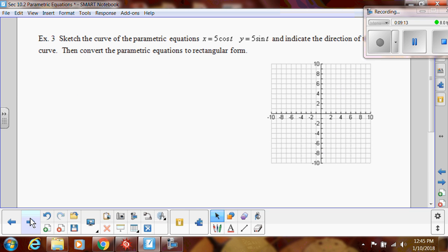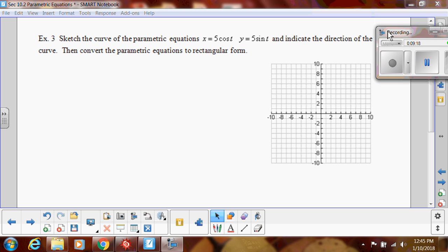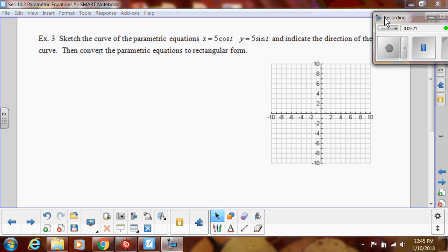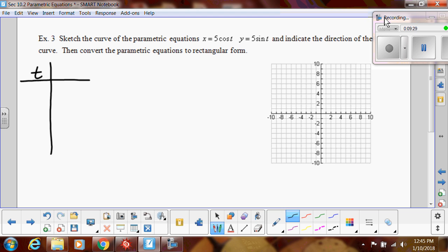Let's do another one. We're going to sketch the curve of these parametric equations and indicate the direction of the curve. Then we're going to convert the parametric to rectangular. So we're going to do both. So we're going to do the charts and we're going to do the parametric and see if they align with what we thought. So I'm going to start. Look at our parametric equations. They're trig ones. So I'm going to start with zero. Then do like pi over two, pi, three pi over two and see if we need to do any more.